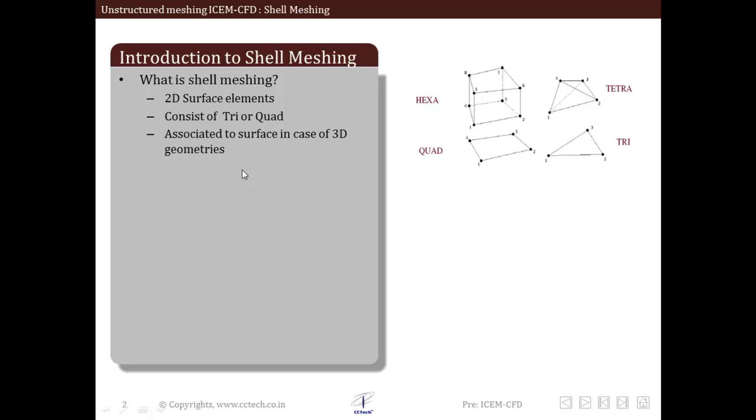These shell mesh elements are associated with surfaces in case of 3D geometries. Whenever we have a 3D geometry, the surface mesh is usually referred to as shell mesh. In 2D, we also have shell mesh, but in 2D that is a volume mesh, meaning the entire mesh is 2D itself because it is a 2D geometry.